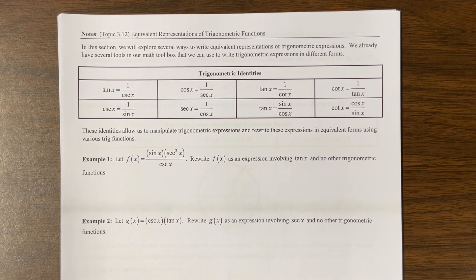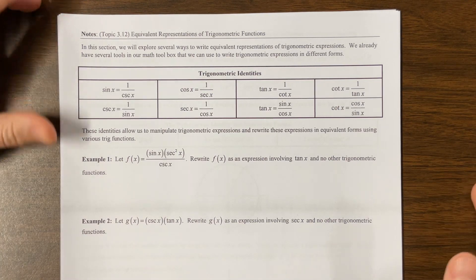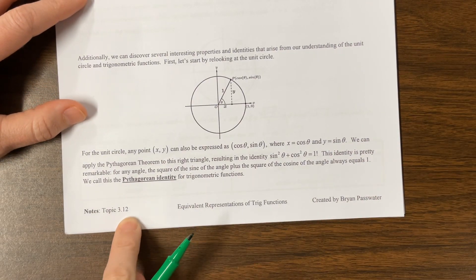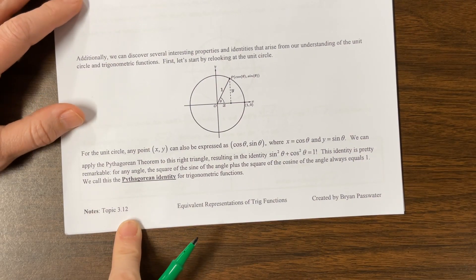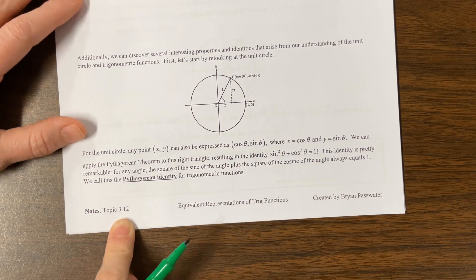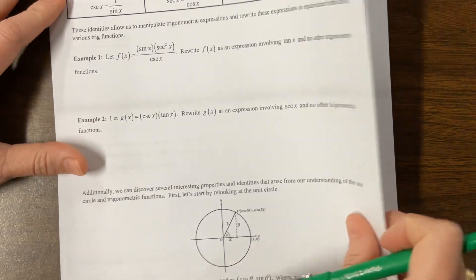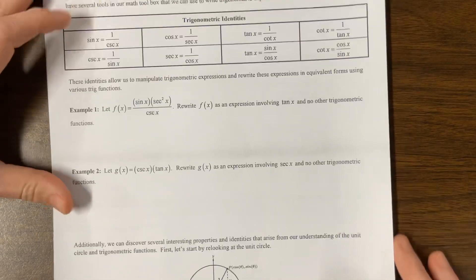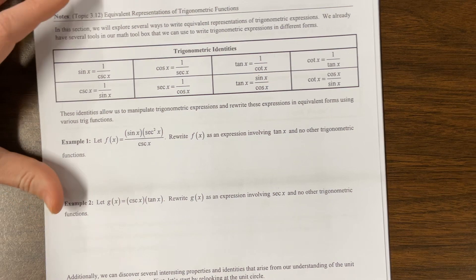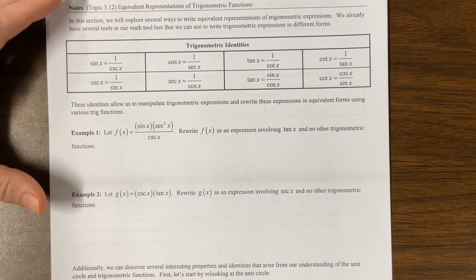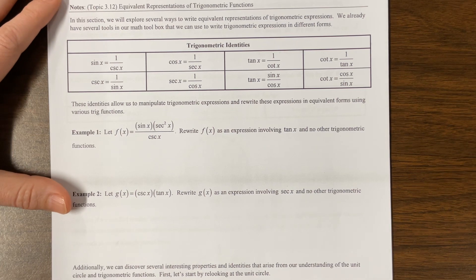Howdy, AP PreCal. It's Ms. Kosh. Today I wanted to work through Mr. Passwater's notes from 312. My kids have already finished this. We've already tested on trig identities. This is one of my favorite parts of the whole curriculum. I have printed out his notes, but I haven't looked at them. So we'll see if I know what I'm talking about today. But I love it. And I wanted to work through his stuff and make a video for those who are benefiting from my videos.